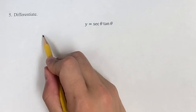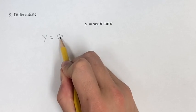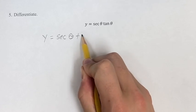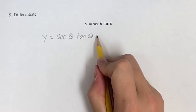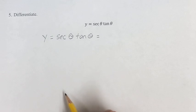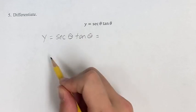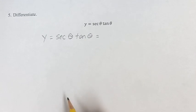In this problem, we're differentiating the function y equals secant theta tangent theta. So we're going to have to use the chain rule here, because we have two functions within our larger function that we have to take the derivative of.